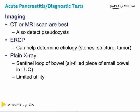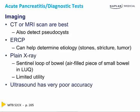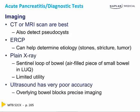A plain flat x-ray of the abdomen could show you a sentinel loop of bowel — an air-filled piece of small bowel in the left upper quadrant — but it has extremely limited utility and we never do it. An ultrasound has very poor accuracy because overlying bowel blocks precise imaging of the pancreas, reducing its accuracy.